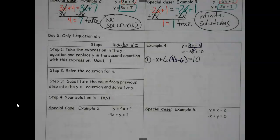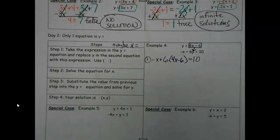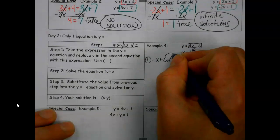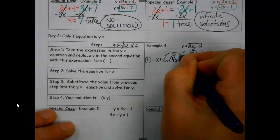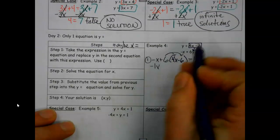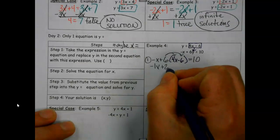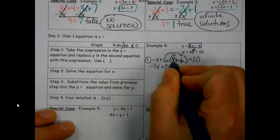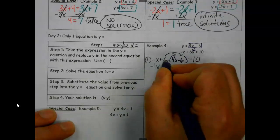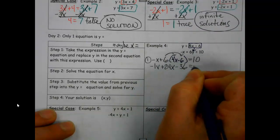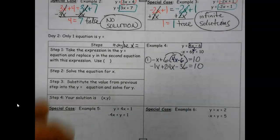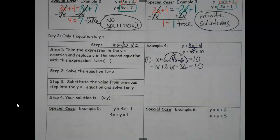Now instead of having two variables, I only have one variable x. So once we do that, we're going to algebra one this and we're going to distribute. So 6 times 4 is 24, 6 times negative 6 is negative 36. And I'm going to start to work through this.